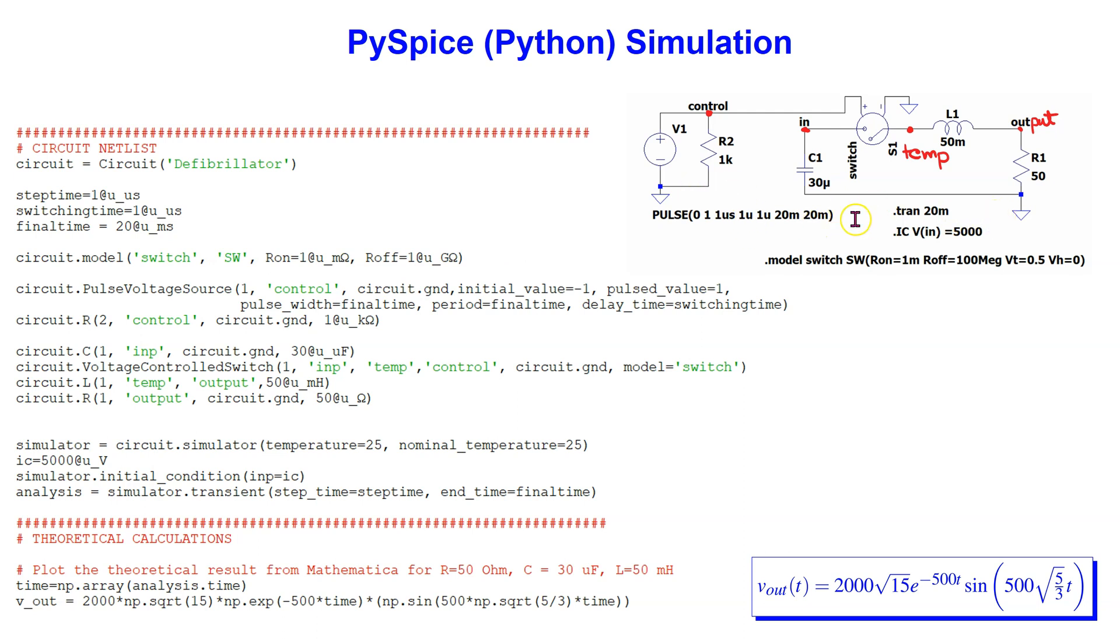Using descriptive node labeling, we can translate the circuit into a netlist as shown here. We define the initial voltage across the capacitor as shown here.